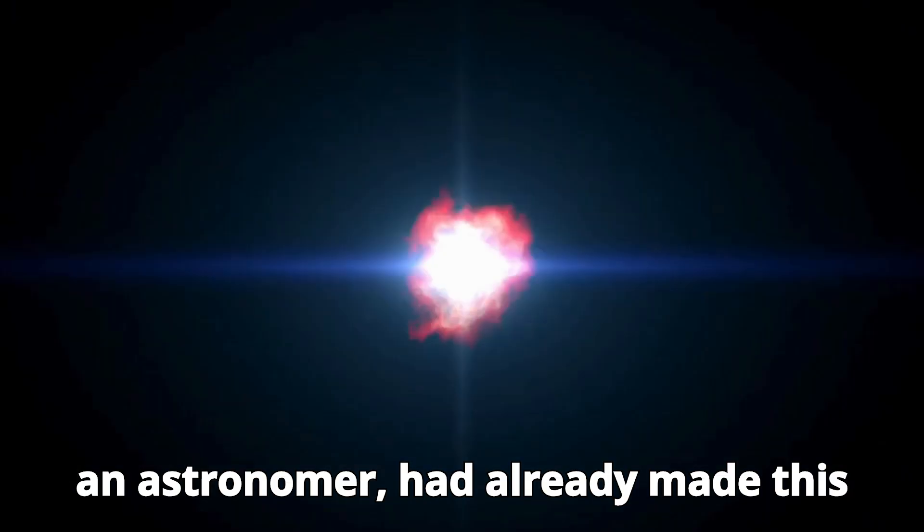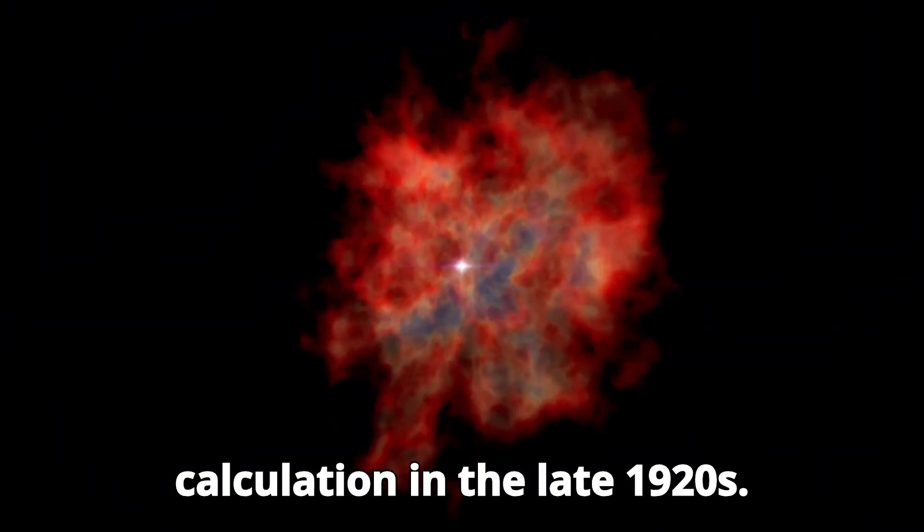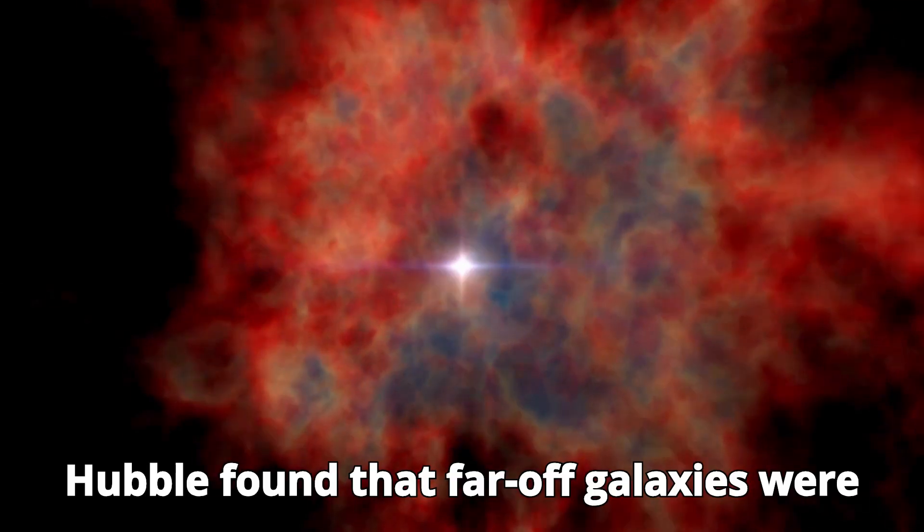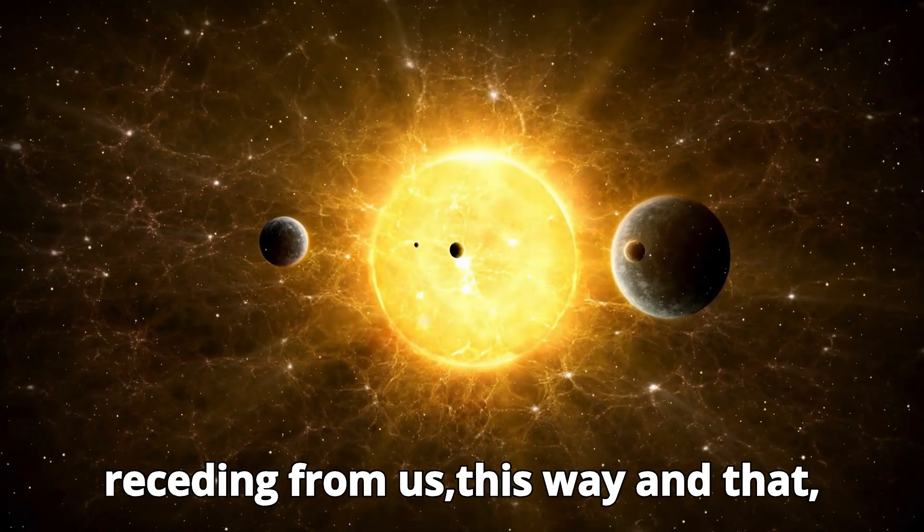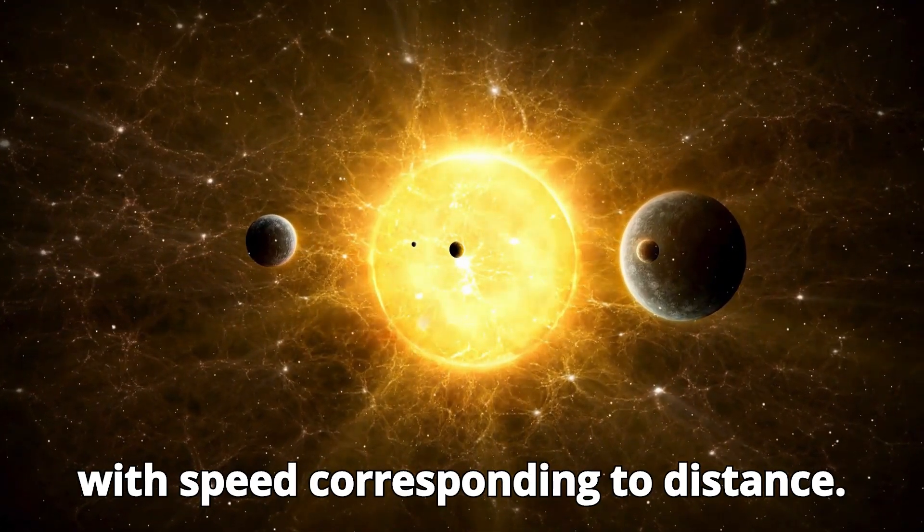Edwin Hubble, an astronomer, had already made this calculation in the late 1920s. Hubble found that far-off galaxies were receding from us, this way and that, with speed corresponding to distance.